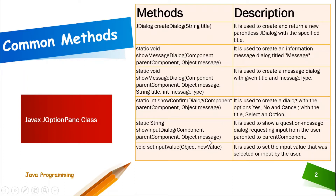Static string showInputDialog is a JOptionPane method that allows the user to accept input. It is used to show a question message dialogue requesting input from the user, parented to the parent component. The last method is void setInputValue with object newValue — it is used to set the input value that was selected or input by the user.